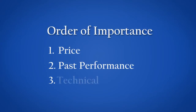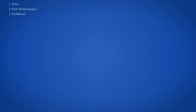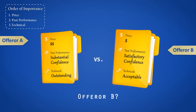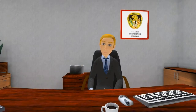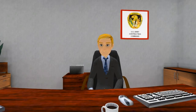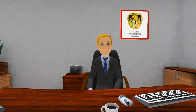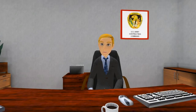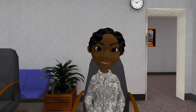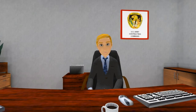Suppose the solicitation now says price, past performance, and technical, in that order. Wouldn't I probably choose Offeror B as the winner because now price has the most relative importance of the three factors? Yes. Under this new scenario, you certainly do have the discretion, as the SSA, to decide that Offeror B's proposal represents the best value to the government, even though Offeror A's proposal has better technical and past performance ratings. But that decision must still be based upon your judgment that Offeror A's better ratings are not worth paying the 20% premium the government would have to pay. In light of the fact that price is now the most important factor, explaining the reasons why you decided not to pay the premium should be somewhat easier than under the previous scenario.